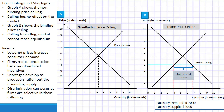In an effort to make the product more affordable to the population, binding price ceilings also prevent a portion of the population from actually being able to buy the product at all.